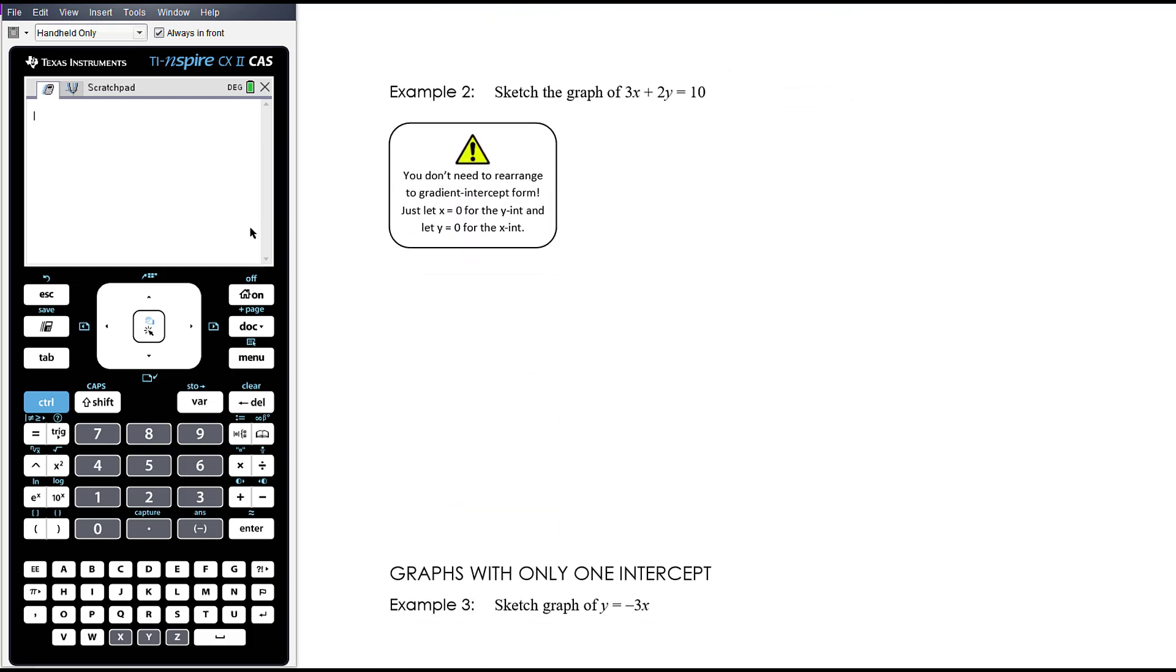Example two, sketch the graph of 3x + 2y = 10. Now in my experience, seven out of every 10 students will, the first thing they'll do when they see this is try to rearrange it to gradient intercept form, which is a complete and utter waste of your time. Seven out of 10 of you will try to rearrange it to that form, and of the people that try to rearrange it, at least six out of 10 of them will do it wrong. Because it's going to end up with fractions and you'll muck it up. There's no fractions required here whatsoever. This is the easiest form to find both axis intercepts.